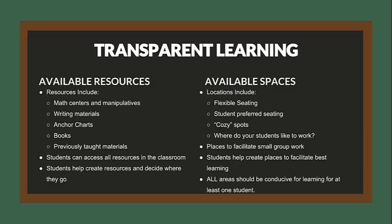It's also important to have available spaces in your classroom that create transparent learning environments. This could be anything such as flexible seating or student-preferred seating, cozy spots — thinking about where your students like to work. I've had some classes where I've had completely flexible seating classrooms and the students really just wanted a chair and desk to work at, so I got more tables and chairs to accommodate them. Or maybe I had too many chairs that weren't being used and students preferred sitting on the floor around the classroom.